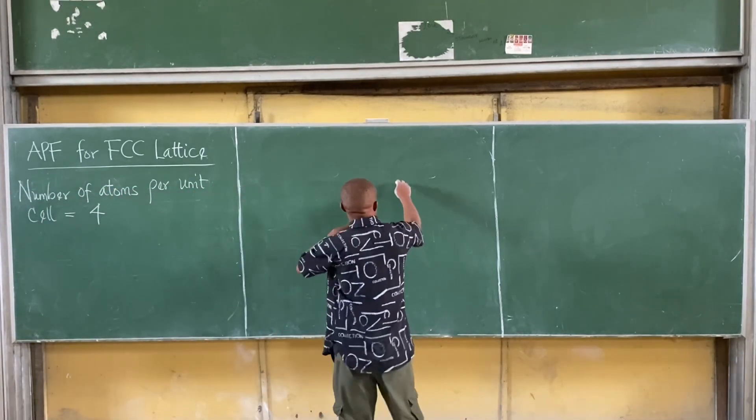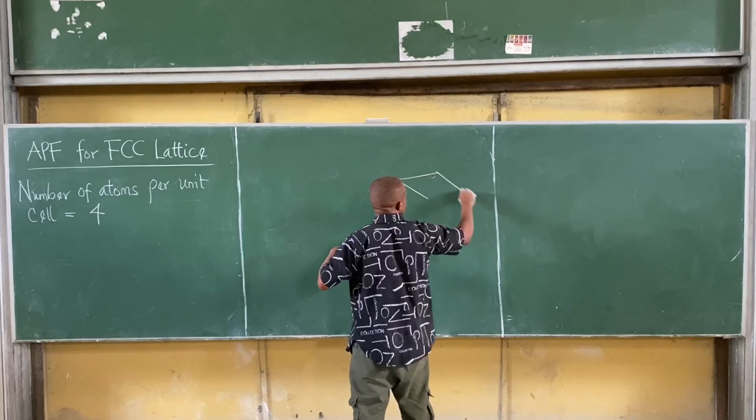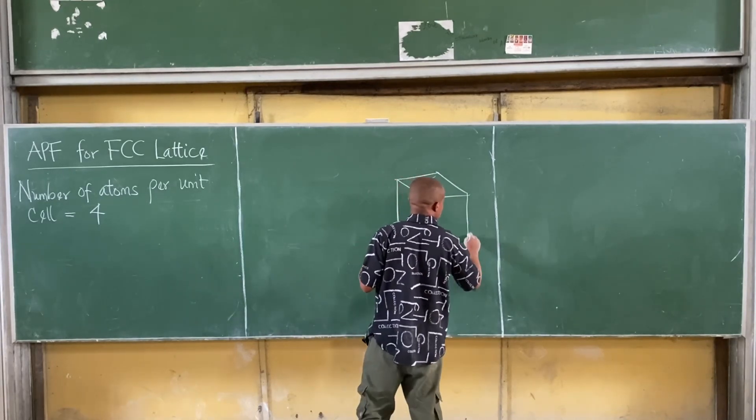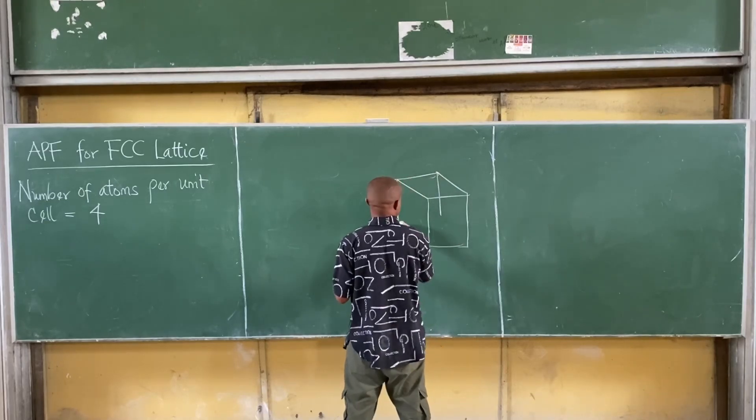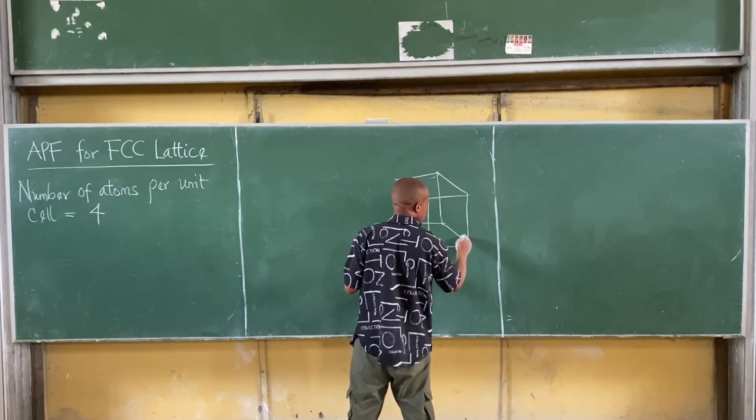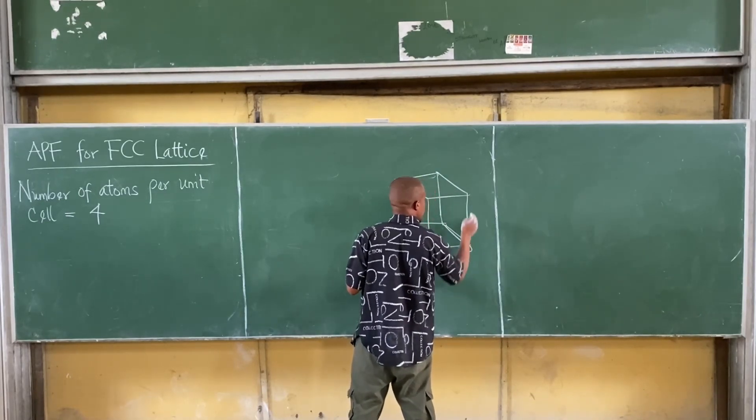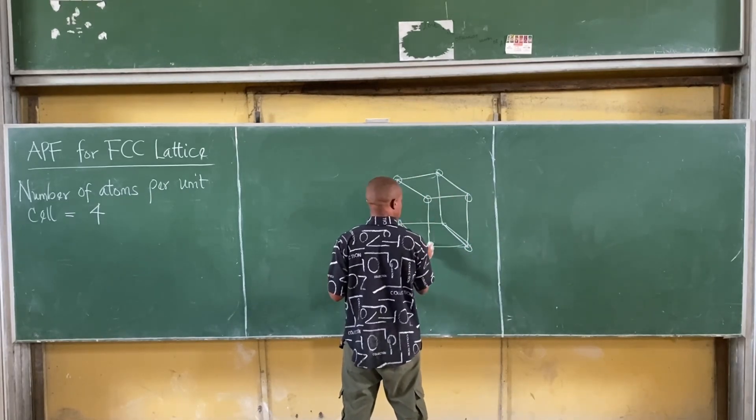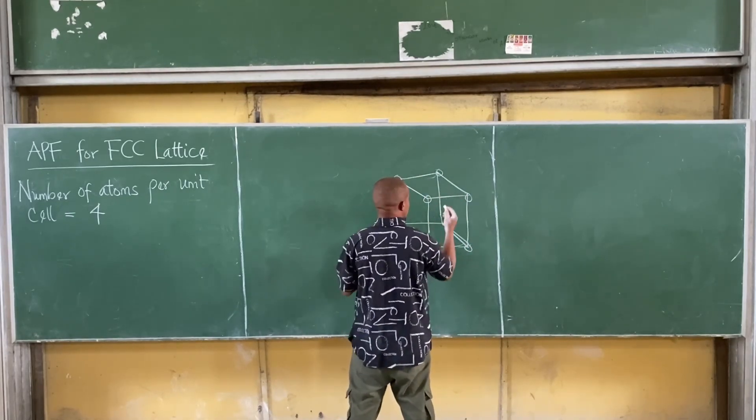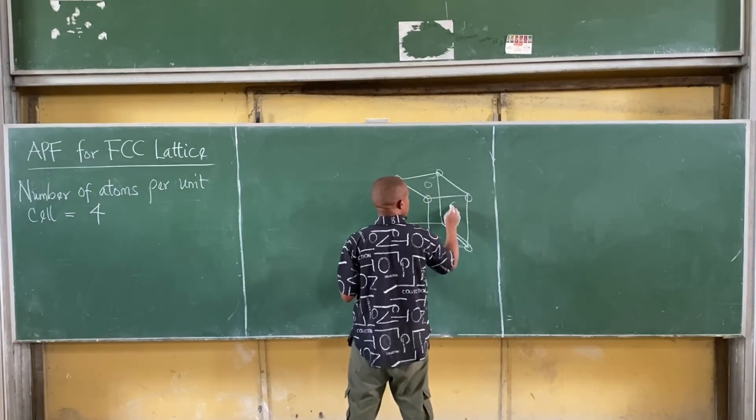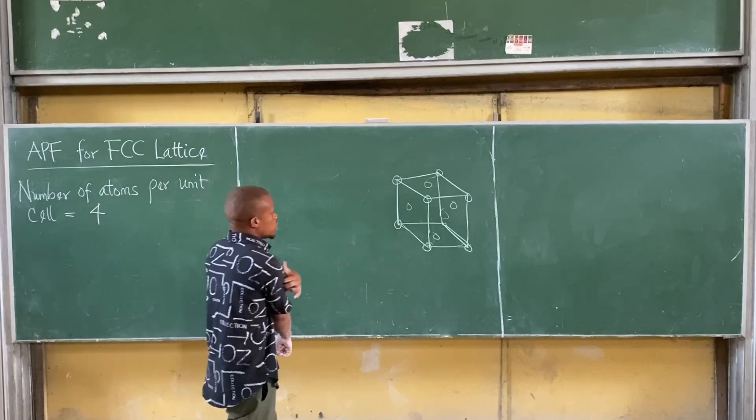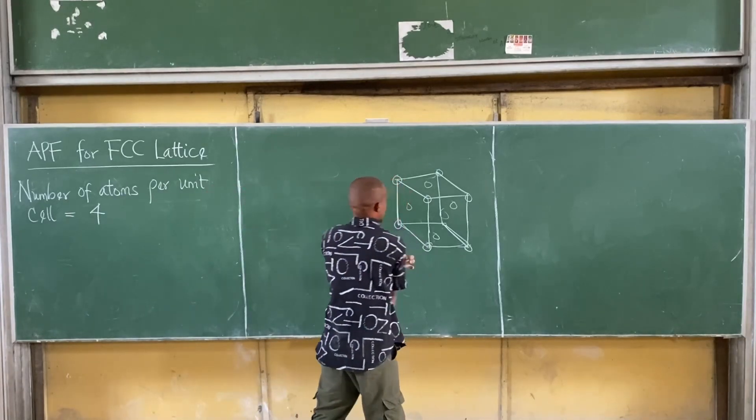Recall that when FCC lattice is face centered, we are having atoms at each of the corners and atoms on the faces. Now, on each of the faces.